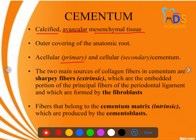Cementum is of two types: primary and secondary. Primary is also called acellular cementum and secondary is cellular cementum. Apart from that, the two main sources of collagen fibers in cementum are extrinsic type and intrinsic type.